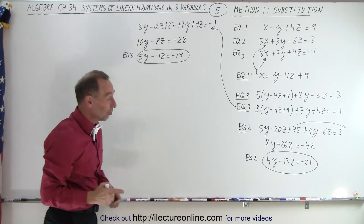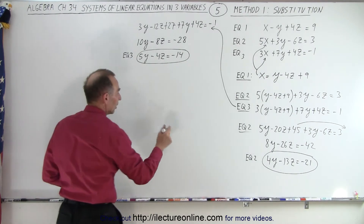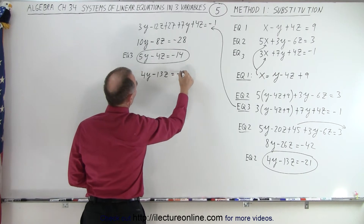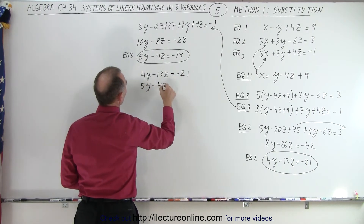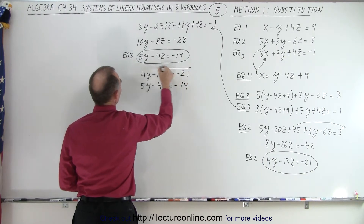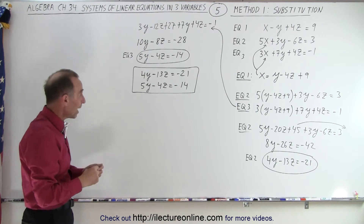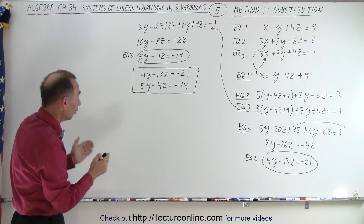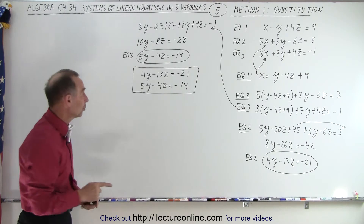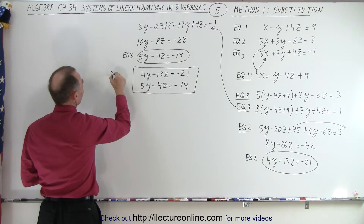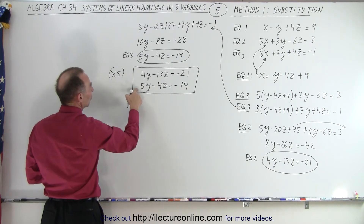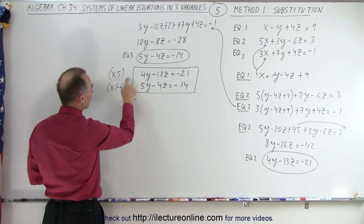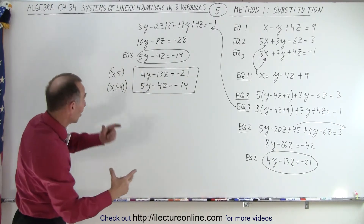So now we have two equations with two unknowns y and z. Equation two is 4y minus 13z equals minus 21, and equation three is 5y minus 4z equals minus 14. We already know how to solve these from the previous chapter. We're going to use the method of elimination — multiply the top equation by 5 and the bottom equation by negative 4, so that the y terms become negative 20y and positive 20y, and when we add the two equations, the y's will drop out.